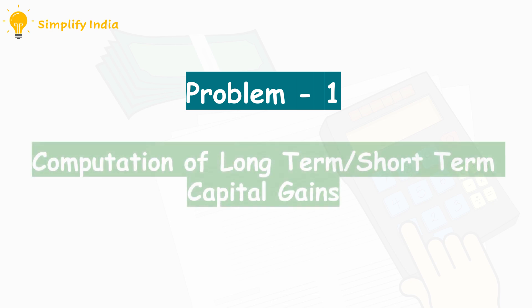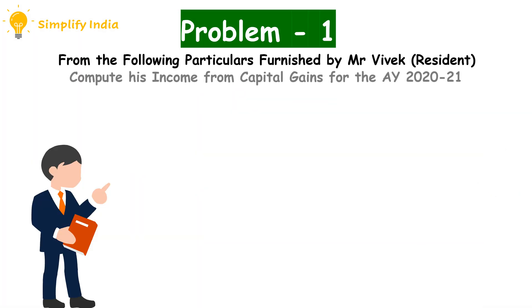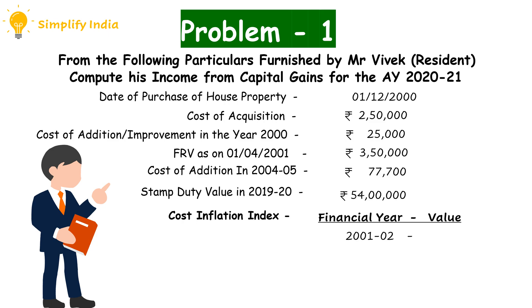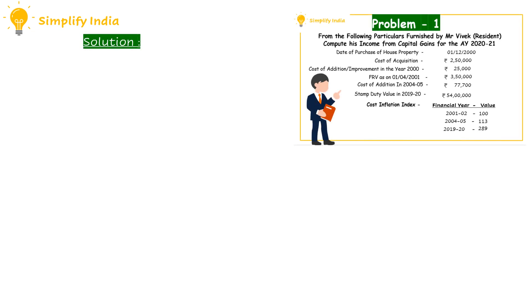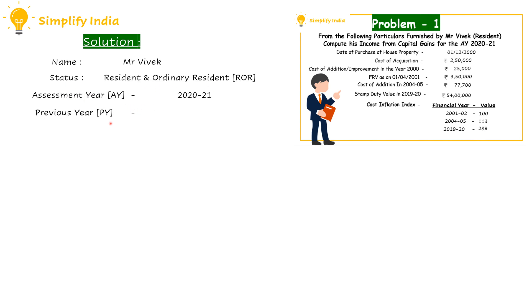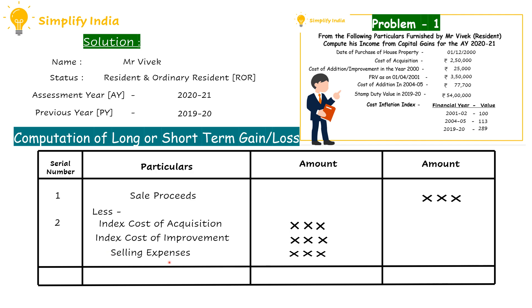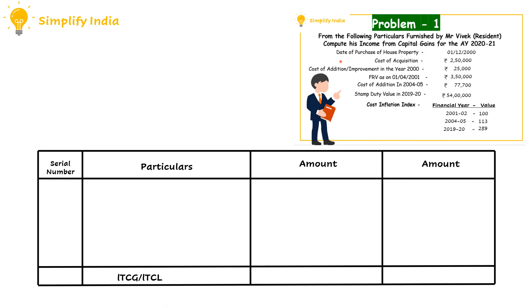Let us start with Problem 1, where we are going to learn the computation of long-term or short-term capital gains. From the following information furnished by Mr. Vivek, we have to compute his income from capital gains for the assessment year 2020-21. From the given problem, we can say that the house property is a long-term capital asset, as it has been purchased on 1st December 2000.